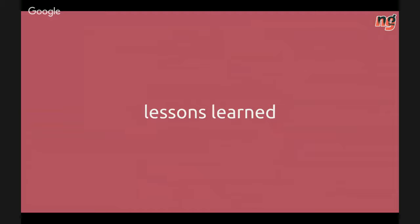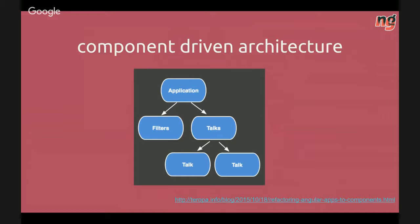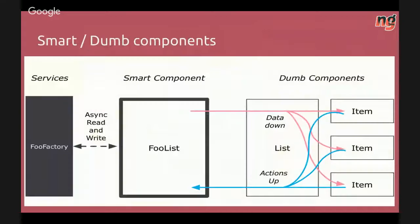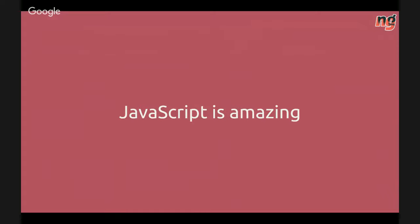But we are smart people and we got lessons learned. We started to leverage component architecture. For those who don't know, it's an architecture where your application is a component tree with one-way data flow. This is really important if you want to migrate from Angular 1 to Angular 2, because Angular 2 leverages these techniques. There's also a fantastic blog post by Tero guiding you step-by-step on how to refactor to component-driven architecture. Important concepts are also smart and dumb components, which came from React.